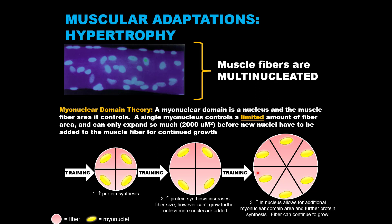In order to support further protein synthesis and further hypertrophy of the fiber, additional myonuclei and thus myonuclear domains must be added to the muscle fiber. Myonucleogenesis is not directly contributing to hypertrophy — it is allowing for greater capacity for hypertrophy via protein synthesis. Thus it is normal for those who resistance train to have elevated levels of myonuclei on their muscle fibers compared to pre-training or those who don't train at all.